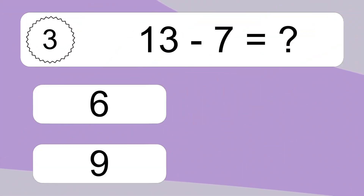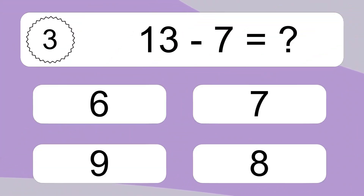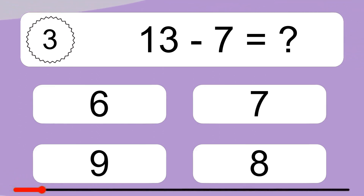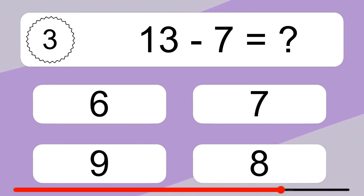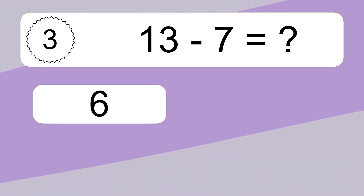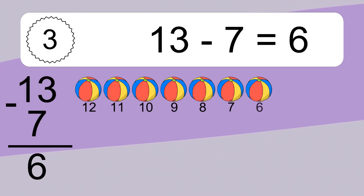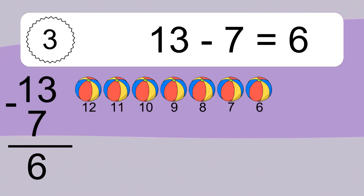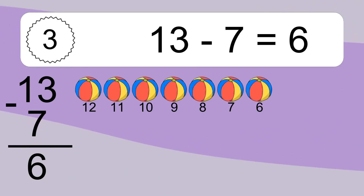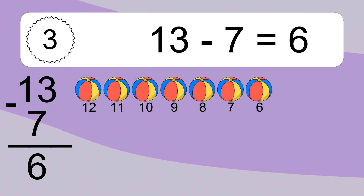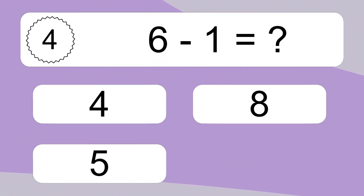13 minus 7 equals what? 13 minus 7 equals 6. Let's count it: 12, 11, 10, 9, 8, 7, 6.